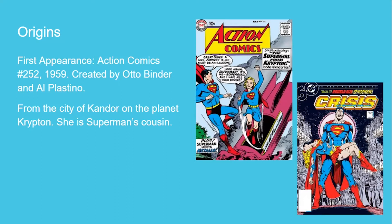When Argo City was threatened by a meteor shower, the family launched Kara in a rocket similar to her cousin's, destined for Earth. Her parents planned for her to be found and raised by her cousin, so they dressed her in a similar uniform, in hopes that it would make it easier for him to recognize one of their own. She has the similar S on her chest — that's their family crest.